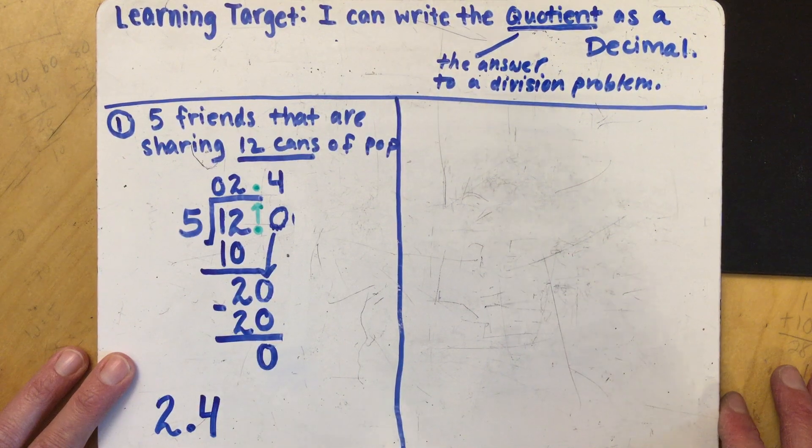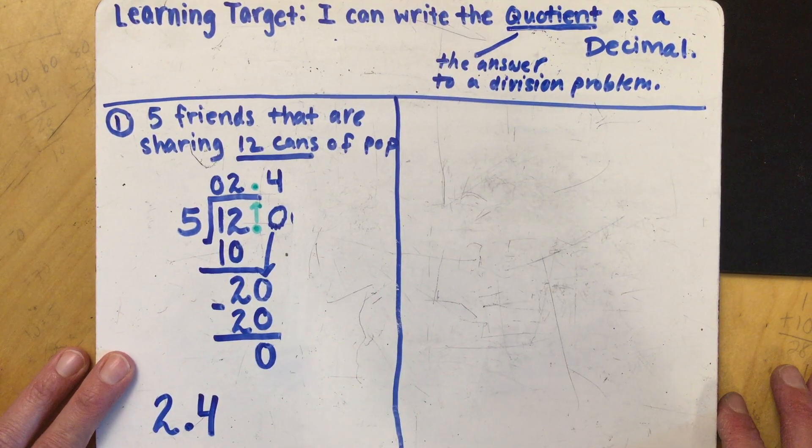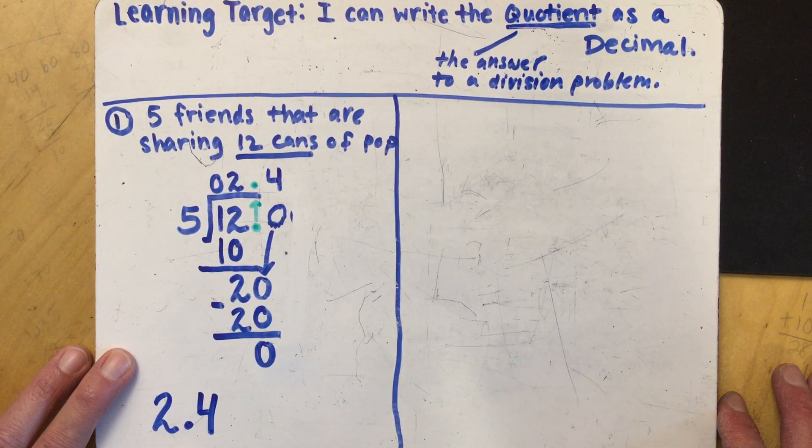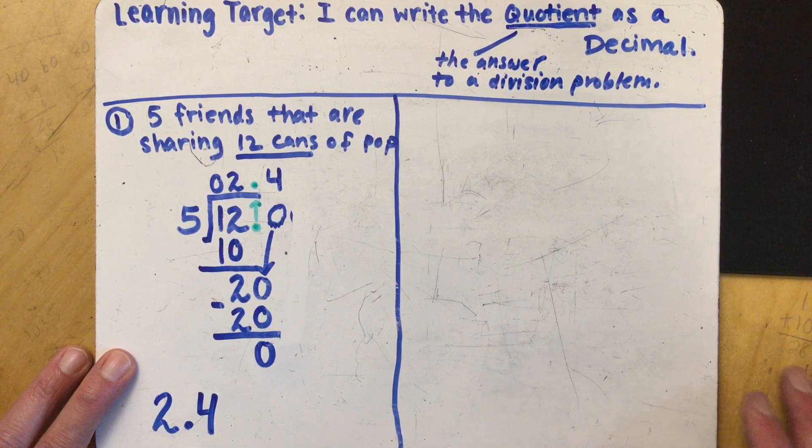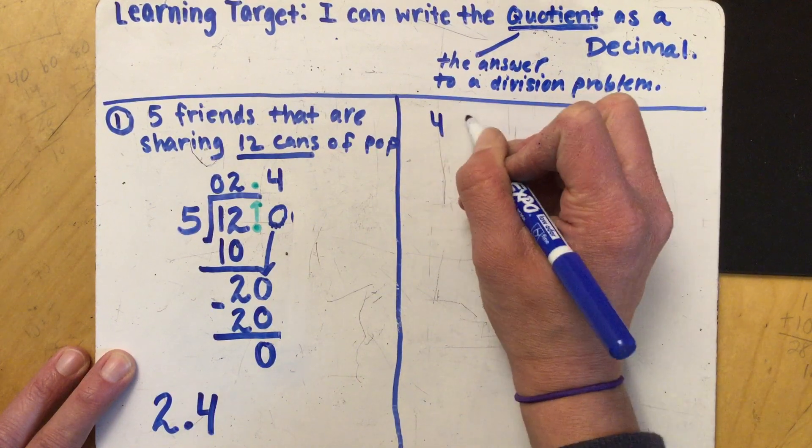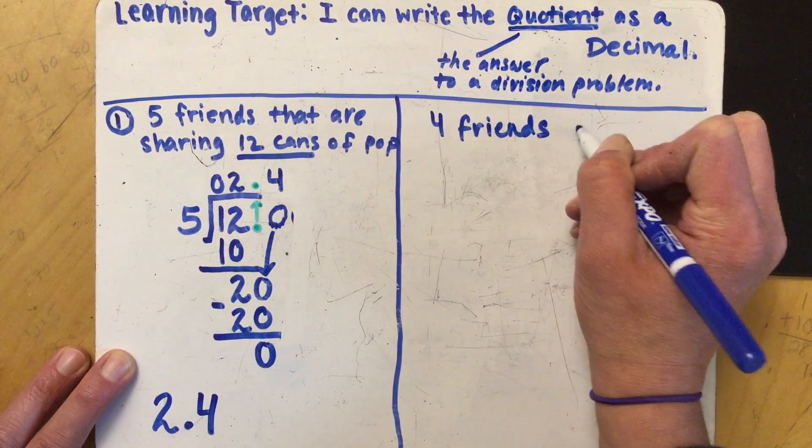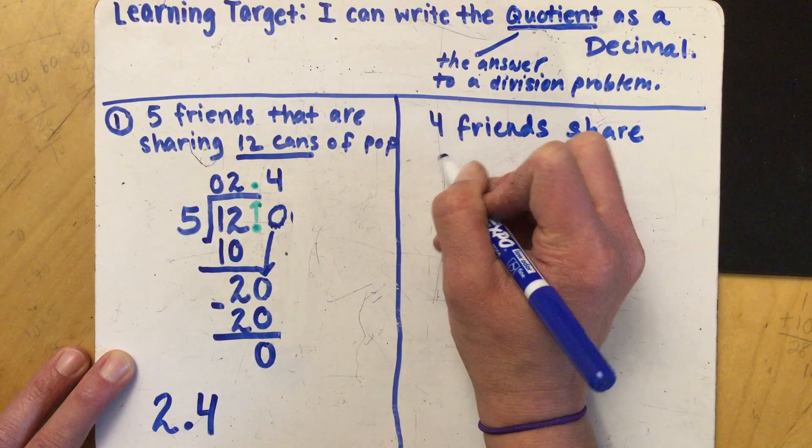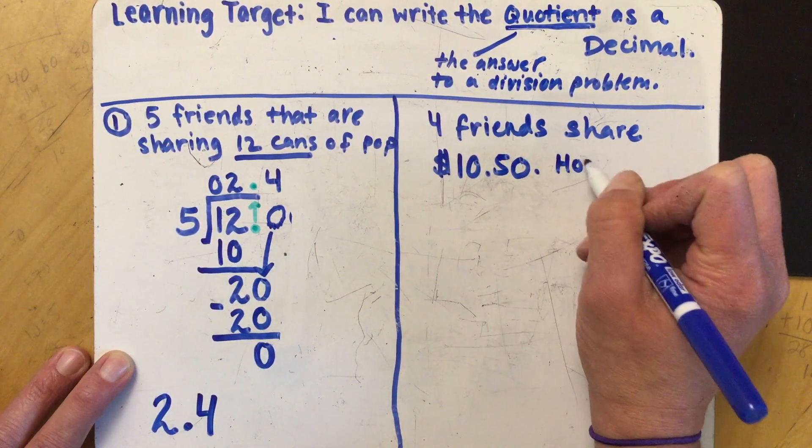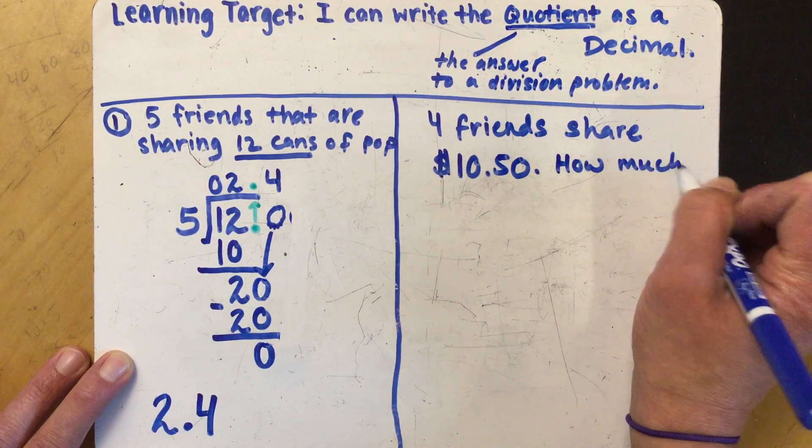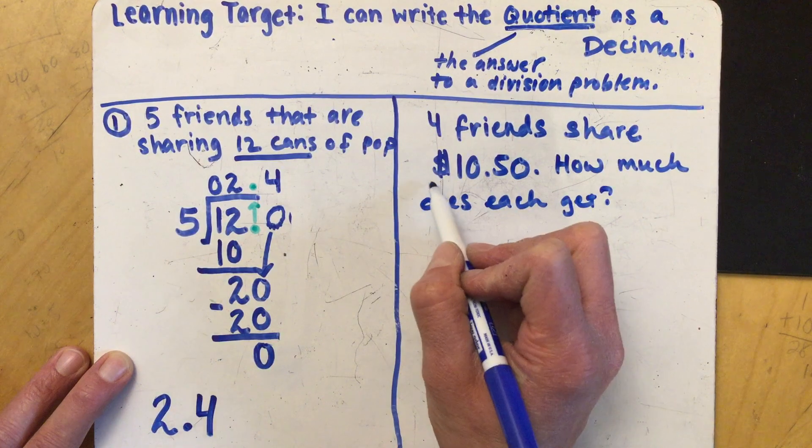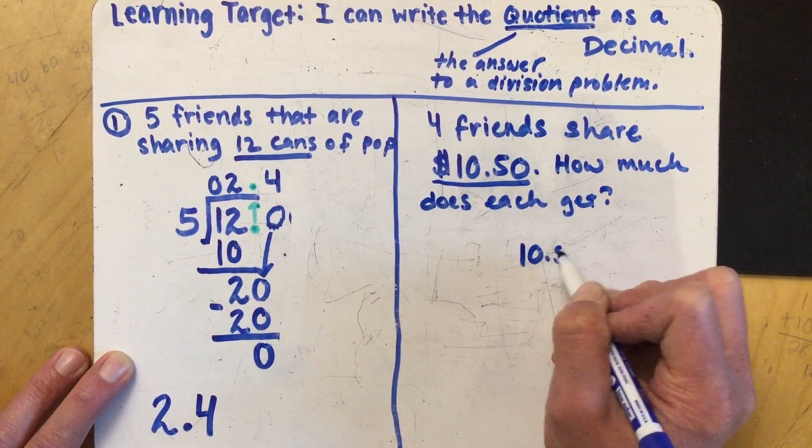Let's look at one more problem and this one is going to be a money related one because usually money already has decimals associated with it. So I want to show you what happens when you need to write your answer your quotient as a decimal but you already have a decimal in there. So let's say four friends share ten dollars and fifty cents. How much does each get?